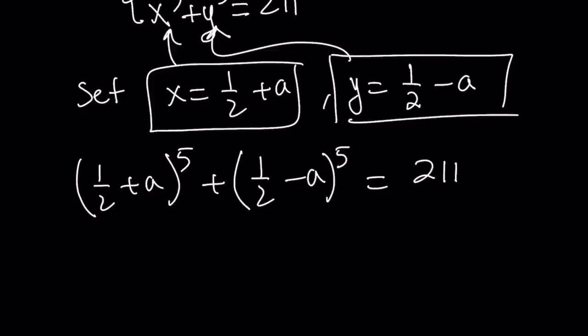If you expand this, take care of the fractions, divide, simplify, whatever, you're going to get the following equation: 16 a to the 4th plus 8 a squared minus 675 equals 0.